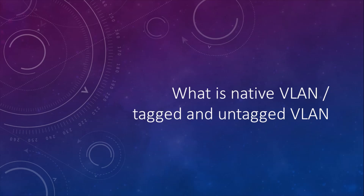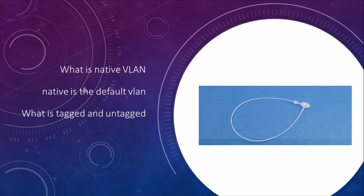Welcome to my YouTube channel. I'm going to explain in a very simple way what is native VLAN. Native VLAN is the default VLAN — like VLAN 1. If a frame does not have any VLAN tagging information, the traffic will be forwarded to the native VLAN. By default, VLAN 1 is the native VLAN.